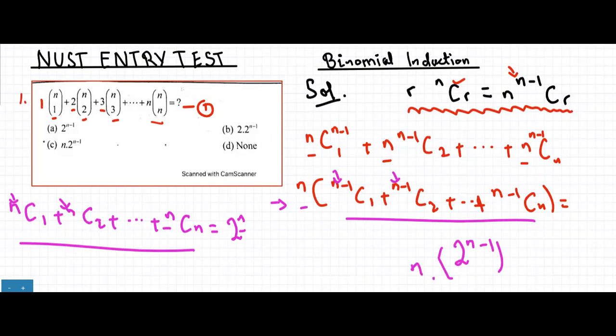So the answer is C. In this section questions may appear difficult but they are actually very easy — we just need to refer to the right properties. Once you know these properties and have them in your mind, the questions become very easy. We used two properties here: r·nCr = n·(n-1)C(r-1), and the sum of all binomial coefficients equals 2^n.